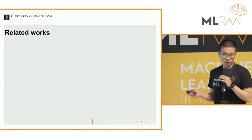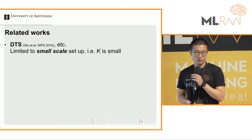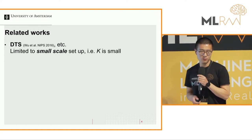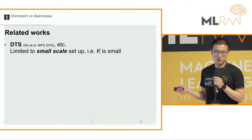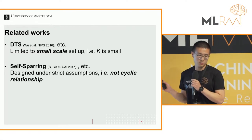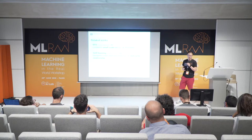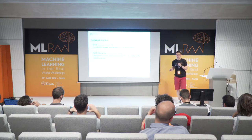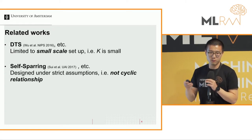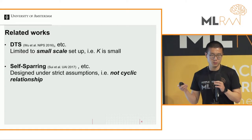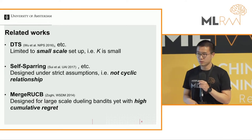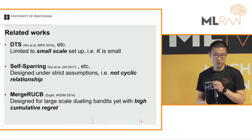For related works, the state-of-the-art is called double Thompson sampling, but because sampling is quite expensive, it is only limited to small-scale datasets. Self-sparring is also a nice algorithm, but it has a restrictive assumption — it assumes there is no cyclic relation between arms. For example, with three arms A1, A2, A3: A1 beats A2, A2 beats A3, A3 beats A1 — self-sparring doesn't allow this. The only existing large-scale dueling bandit algorithm is merge RUCB.